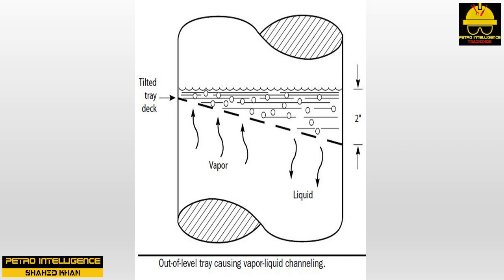Once the weight of liquid on one portion — the lowest area of a tray deck — exceeds the dry tray pressure drop, the hydraulic balance of the entire tray is ruined. Vapor flow through the low area of the tray deck ceases. The aeration of the liquid retained by the weir on the low area of the tray deck stops, and hence the hydraulic tray pressure drop is eliminated.